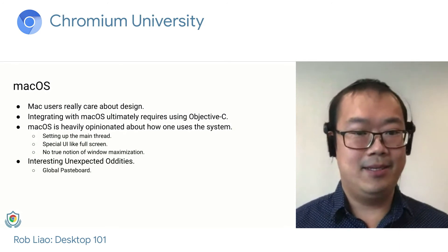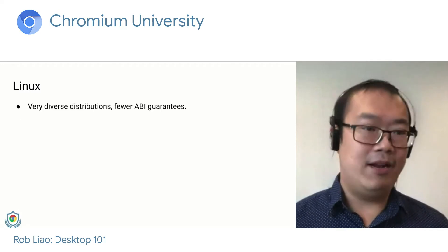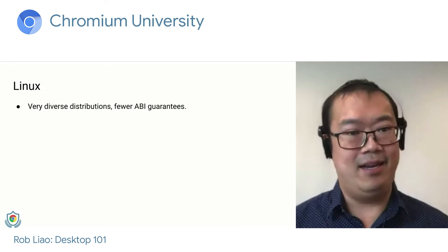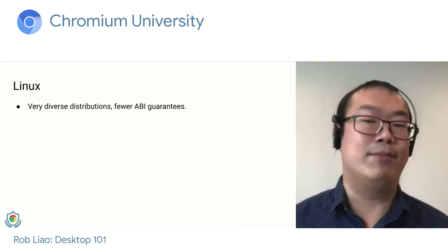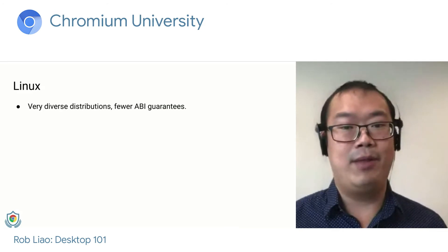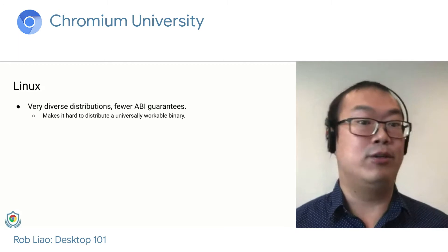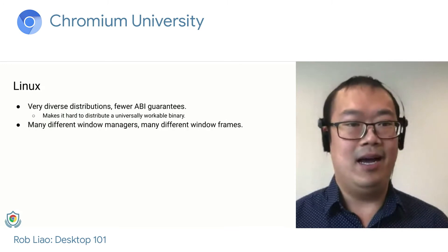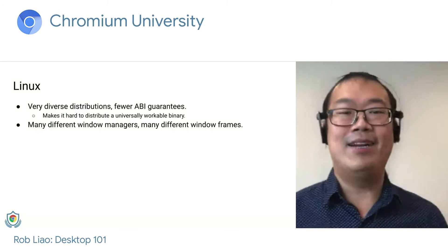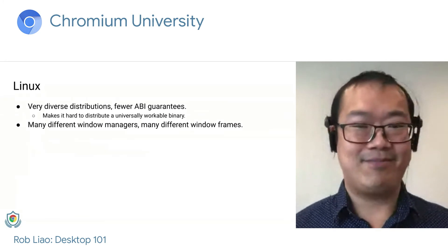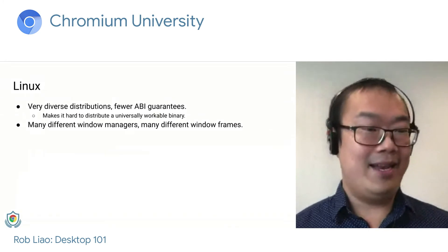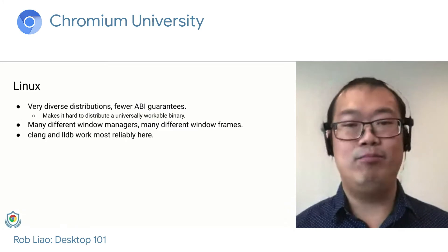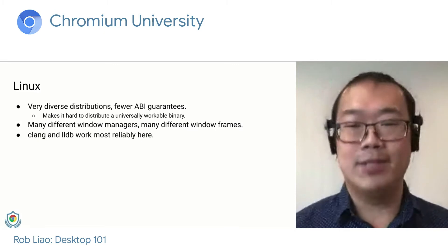Finally, on to Linux. Linux has many diverse distributions, many different versions of libraries, and fewer ABI guarantees. The binary contract is different from platform to platform, making it very difficult to distribute a universally workable binary — oftentimes you'll have to build Chromium from scratch. There are also many different window managers, so we have many different window frames and UI bugs to worry about. One nice thing Linux does give us is that our toolchain with Clang and LLDB works most reliably there — it's fast, and we can do a lot of introspection.